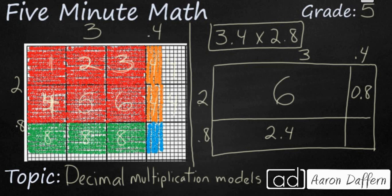And then finally we have our very smallest square over here. That's going to be my 0.4 and my 0.8. So 4 times 8 is 32. So if I have 4 tenths times 8 tenths, that's going to be 0.32.